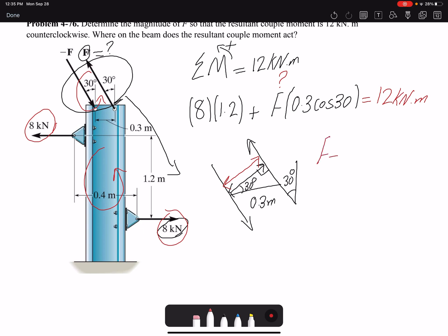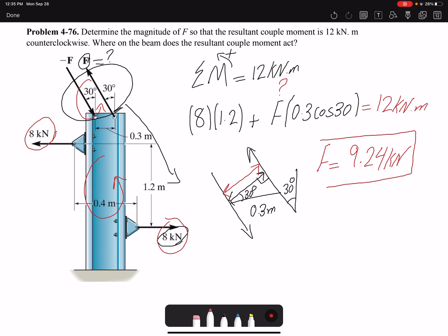The second part is asking where on the beam does the resultant couple moment act. Because these two forces create a moment and then the other two forces create a couple moment.